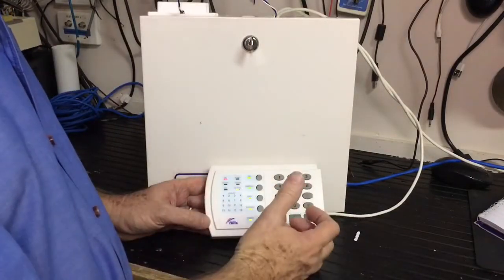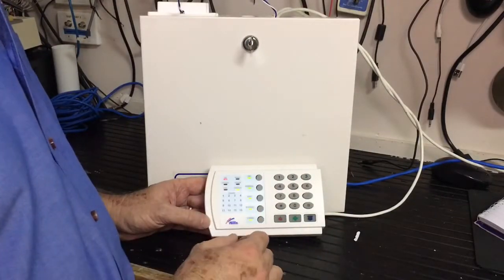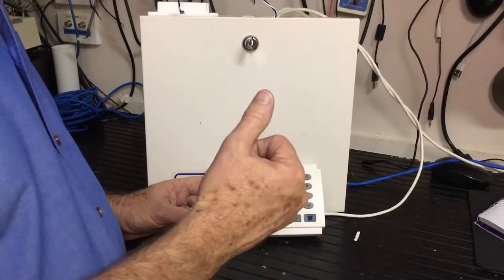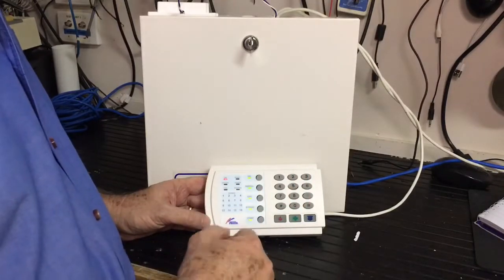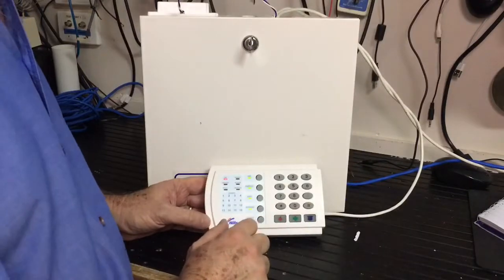We're on programming. This is on an NX 16 panel at the moment. So we've changed our type 19 now behaves as a 24-hour chimeable and bypassable zone. It doesn't do anything else, doesn't set sirens, doesn't do anything else.